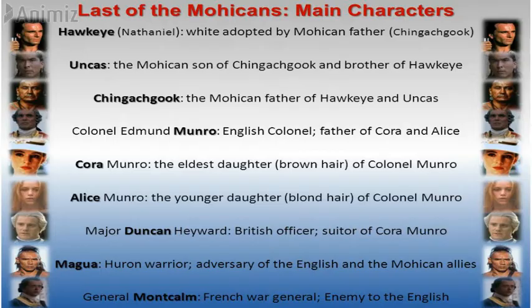We also have Colonel Edmund Munro, the commanding officer of the British fort, and his two daughters — Cora Munro and Alice. Cora and Alice are sisters but from different mothers. Edmund Munro married a woman of African descent from the West Indies, and from her he had Cora, which explains her dark complexion and raven hair, while Alice was blonde. Major Duncan Hayward was romantically involved with Alice. Tamenund was the head of the Delaware tribe, and General Marquis de Montcalm also appears.